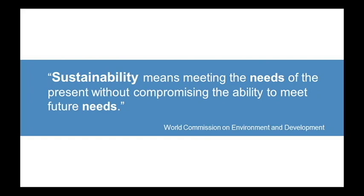This commonly-used definition is: sustainability means meeting the needs of the present without compromising the ability to meet future needs. This was developed in 1987 during the World Commission on Environment and Development, sometimes called the Brundtland Report. It's centered on sustaining ourselves now — making sure people have access to healthy food, the environment is taken care of — and also making sure that future generations have access to these same things. It's focused on future generations, which is not often discussed in typical environmental discourse.